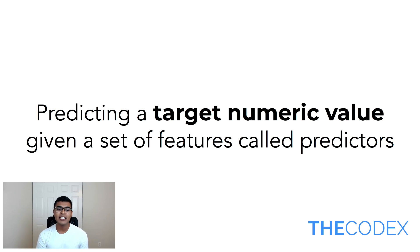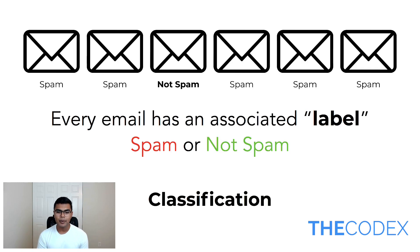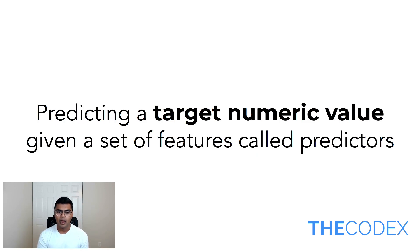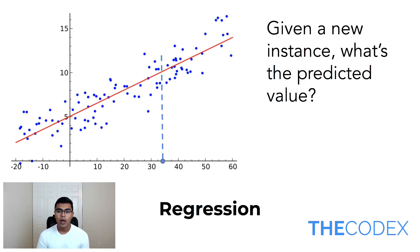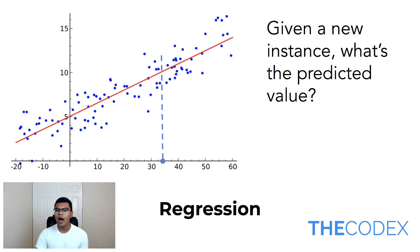This whole concept of grouping together items is called classification and is one of the types of supervised learning. The other type is predicting a target numeric value given a set of features called predictors. So in the first example, you have some sort of literal classification — this is a hot dog, this is not a hot dog, as you might have seen in Silicon Valley. However, in the other example, given a list of features, you get a number out of it, and this number can be from negative infinity to positive infinity — a continuous value. Given a new instance, what is the predicted value? This is a concept known as linear regression, or more generally, regression.